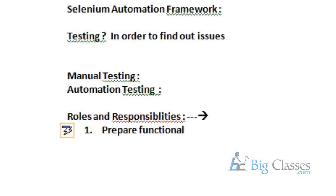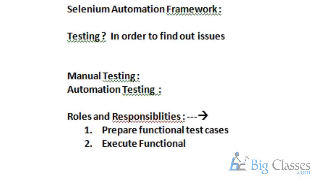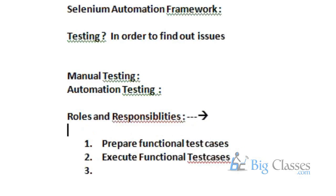Okay, that's it? Do you have anything else? Like, report defects, re-test them, and validate once they're fixed. I understand. So basically, the first step for every test engineer: step one means we are getting the requirement from the clients, or from the product owner, or from the business analyst, depending on the process and the client.